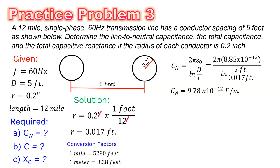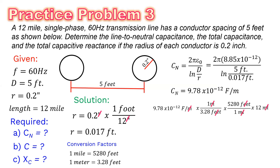Using conversion factors — 1 mile equals 5,280 feet and 1 meter equals 3.28 feet — we multiply 9.78 times 10 to the negative 12 farads per meter by 1 meter over 3.28 feet, then by 5,280 feet per mile, then by 12 miles. All units cancel, giving a line-to-neutral capacitance of 1.89 times 10 to the negative 7 farads, or 189 nanofarads.